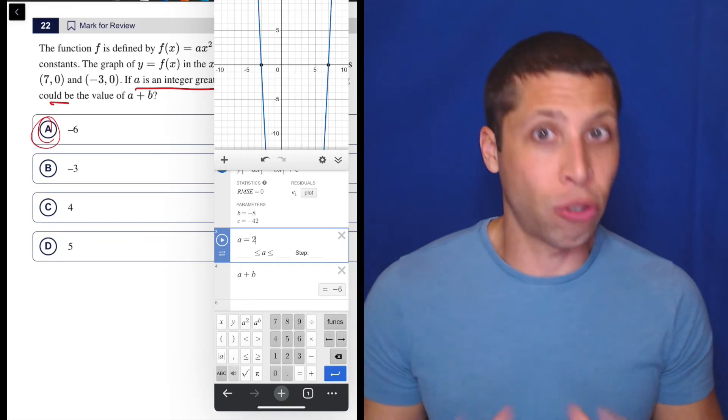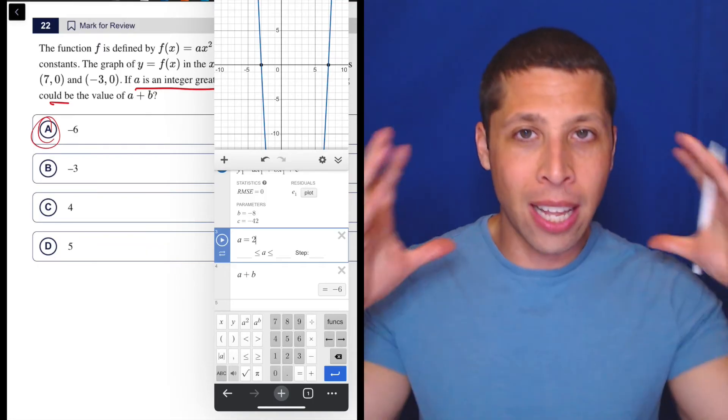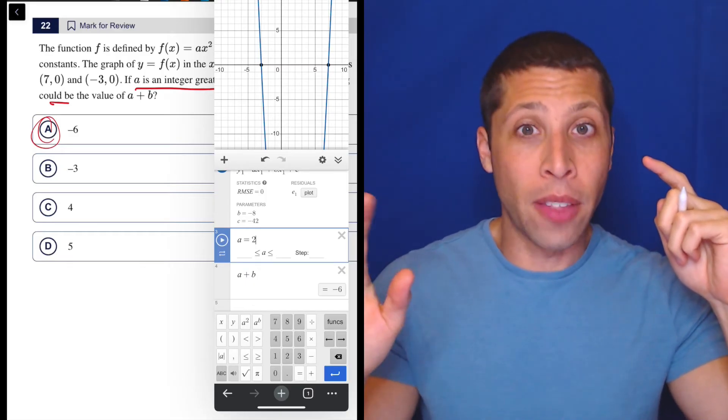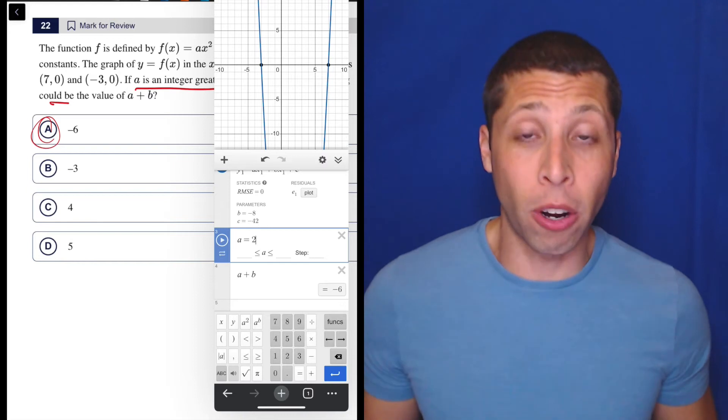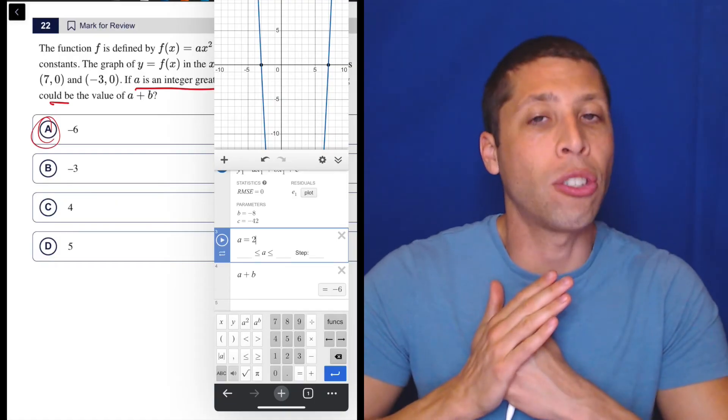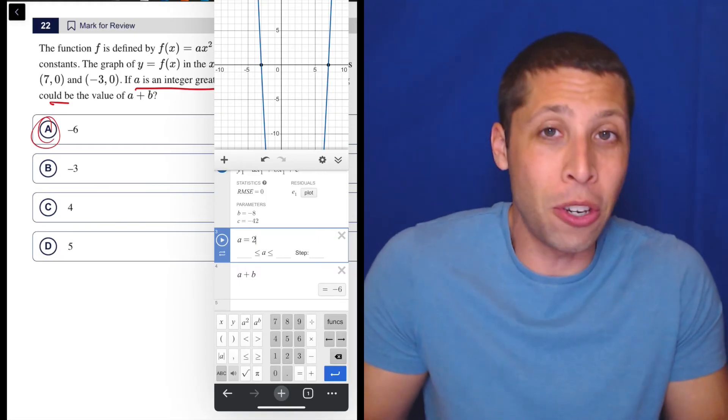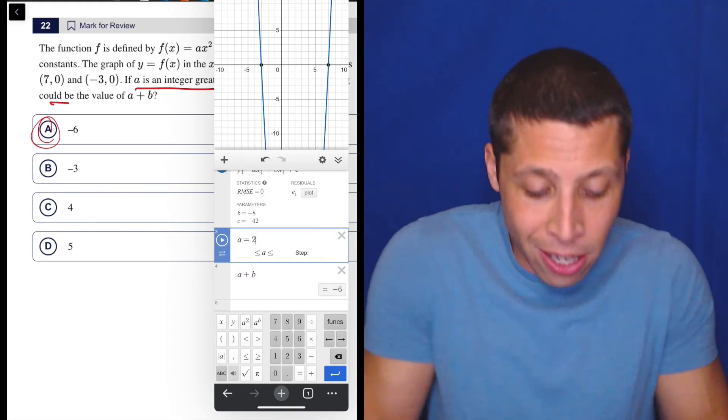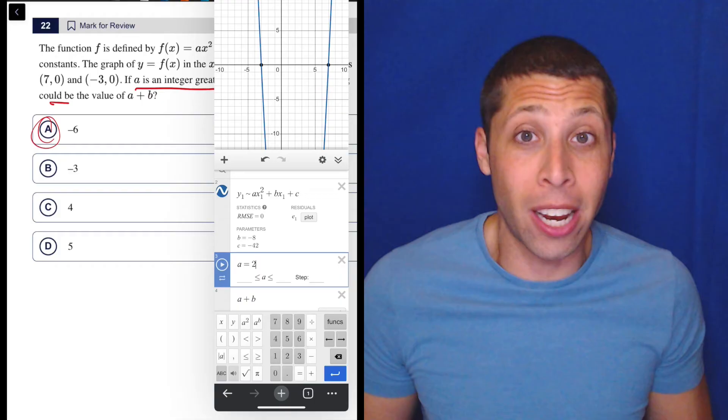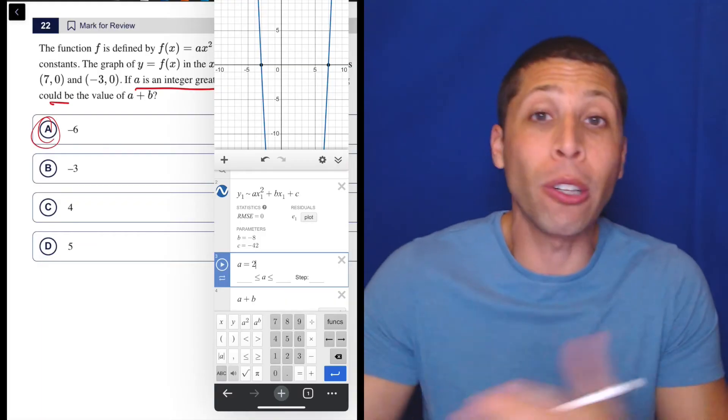And this is something I struggle with with a lot of my students who, for various reasons, they can't start a question unless they have a full plan and they know that something that they're about to do, some step they're about to go down, they know it's going to work. But you can't approach the SAT like that, especially the hard questions, the twisted questions, because if you always need to know if something is going to work before you try it, you will hit so many dead ends. You will just spend half the time on these hard questions, thinking and wondering what to do when just doing it was all you needed, right? I didn't know that this was going to work out so nicely, but I did it anyway, because why not?